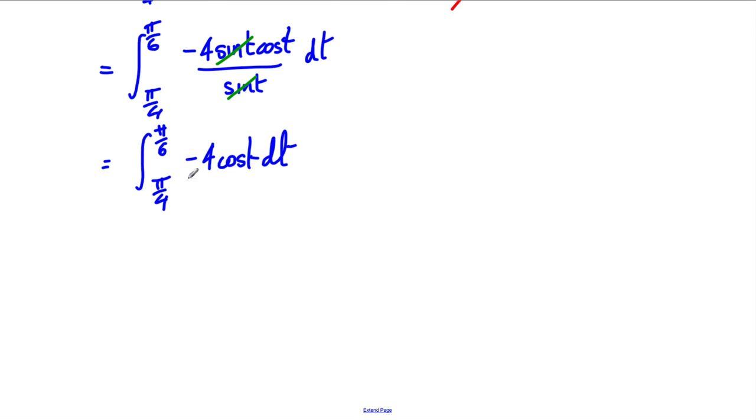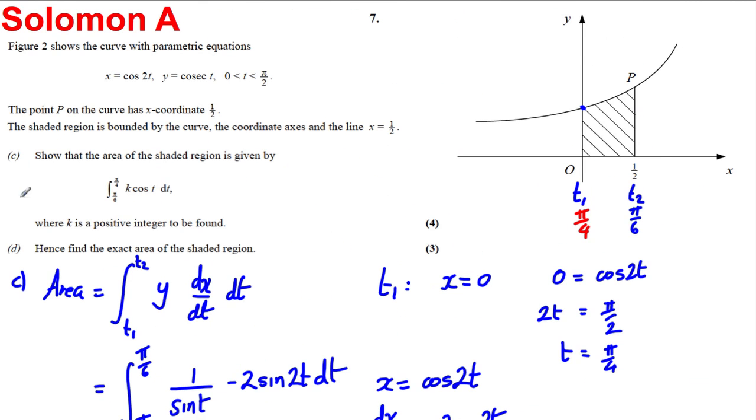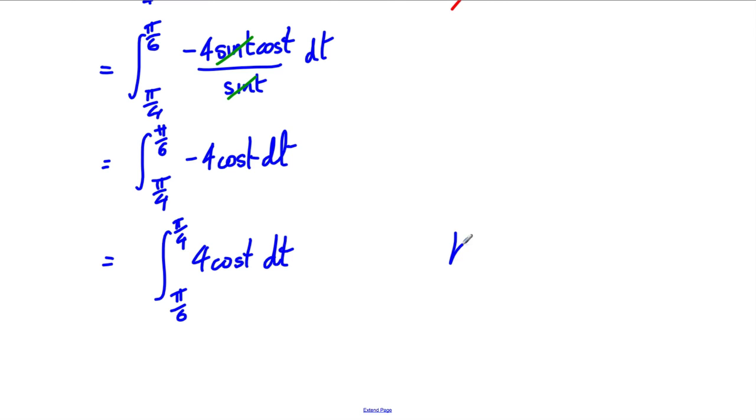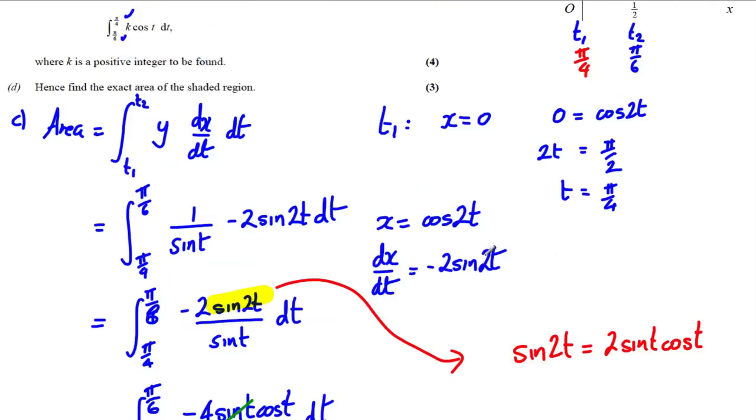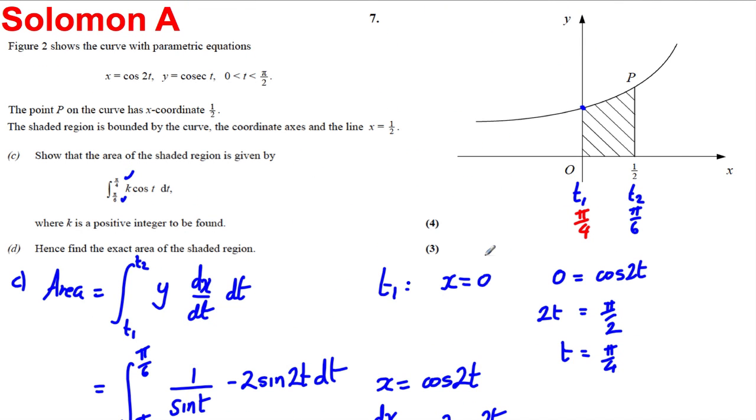But this negative here means we can swap these around. So we can make that a plus 4 cos t and we can swap these limits around so it's between pi by 6 and pi by 4 dt. And I think then we've got the question, it's got the pi by 6 here, the pi by 4 here, and it's got the k being 4. So we could state that k is equal to 4.